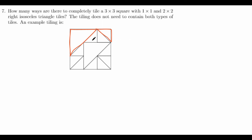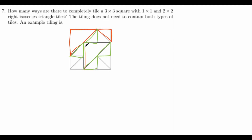One idea is to do casework on where the big triangles go — first, how many big triangles there are, and where they go. So let's try to observe how placing the big triangles affects the other tiles. Let's say we place the right triangles as shown in the example. What tiles are forced? Well, this tile right here is forced, as well as this tile right here, because something has to cover the slant that this big tile gives. Similarly, this triangle and this triangle are both forced by the big triangle.